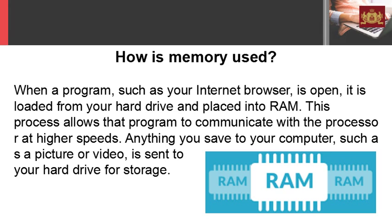When a program, such as your internet browser, is open, it is loaded from your hard drive and placed into RAM. This process allows that program to communicate with the processor at higher speeds. Anything you save to your computer, such as a picture or video, is sent to your hard drive for storage.